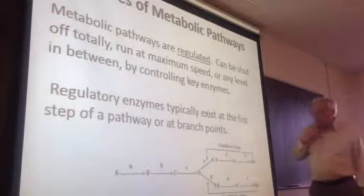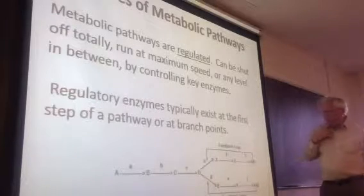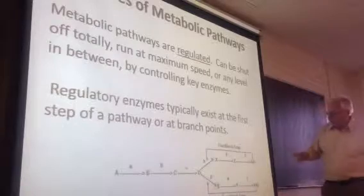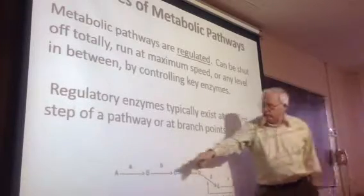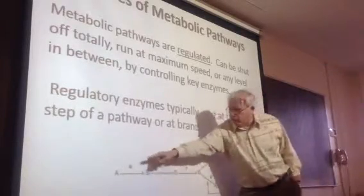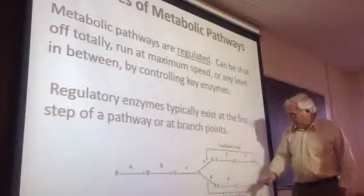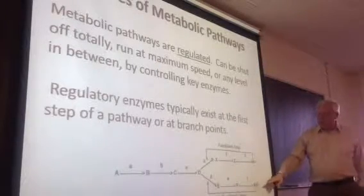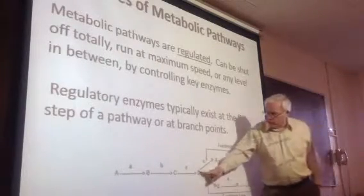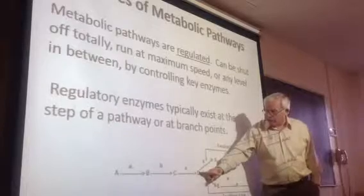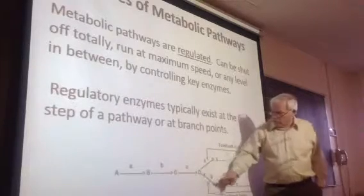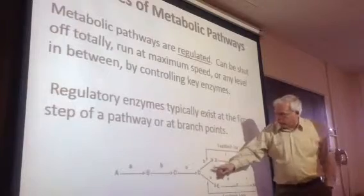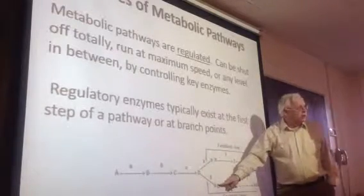Regulation usually happens at key branch points or at the beginning. So here's a theoretical pathway where you're starting with metabolite A and you're making these two products, branching at intermediate D. So there's going to be two enzymes here — one that converts D to X and one that converts D to E.